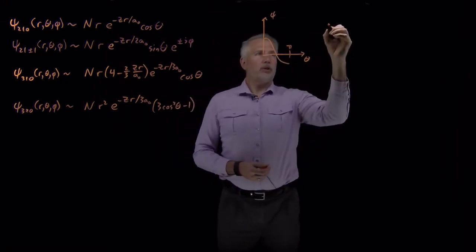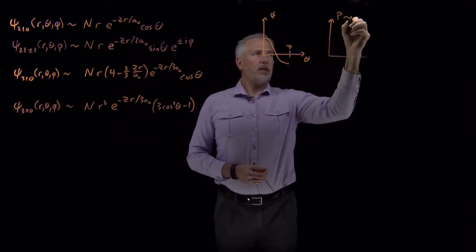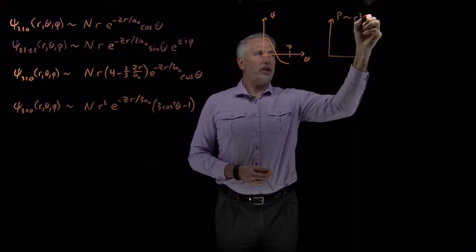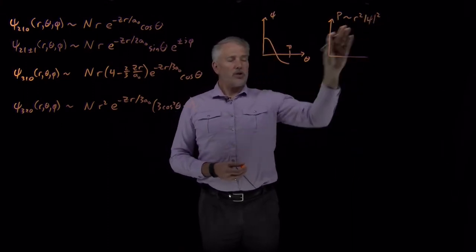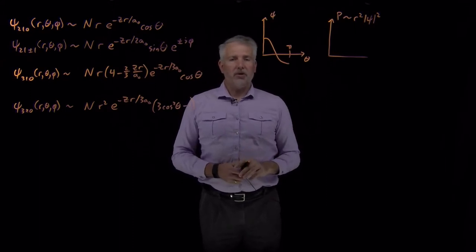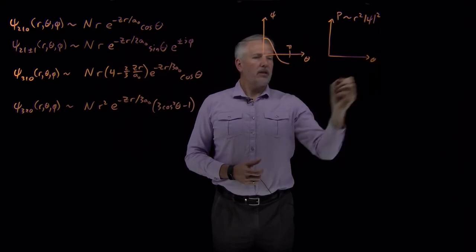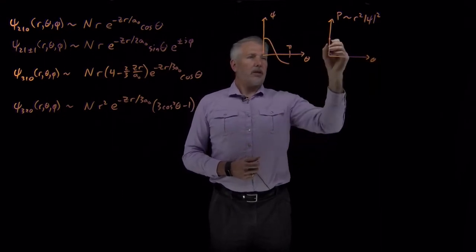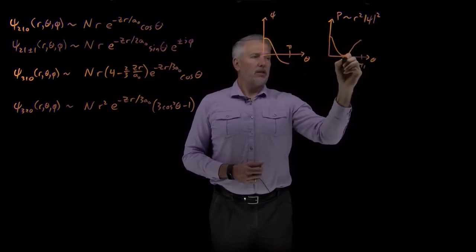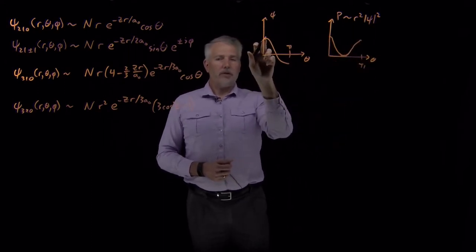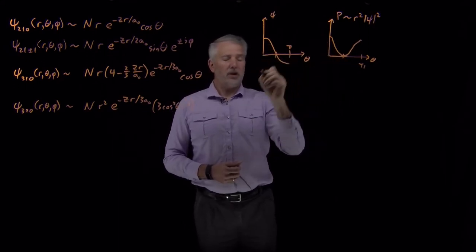Remember, we're not really interested in the wave function so much as in the probability. The probability looks like wave function squared with an r squared in front of it. The r squared isn't particularly necessary this time because we're only plotting the theta dependence. But if I square this wave function, then regardless of whether the value is positive or negative, the squared value is positive.